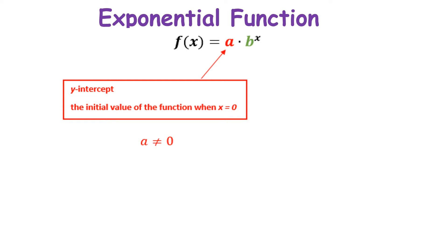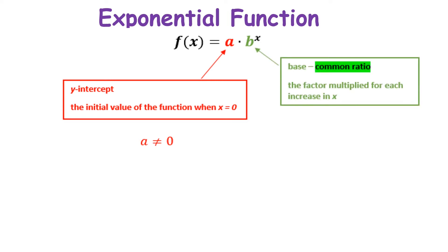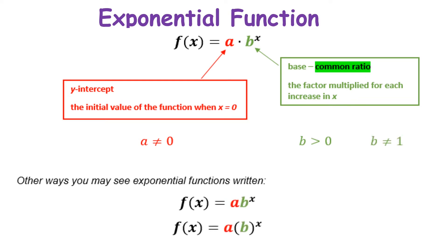The 'b' represents the common ratio, which is the factor multiplied for each increase of x. You're just finding the common ratio between your y-values, and b has to be greater than zero. Other ways you could see exponential functions: a·bˣ without the multiplication symbol, or b in parentheses. Let's delve a little more into exponential functions looking at growth and decay.